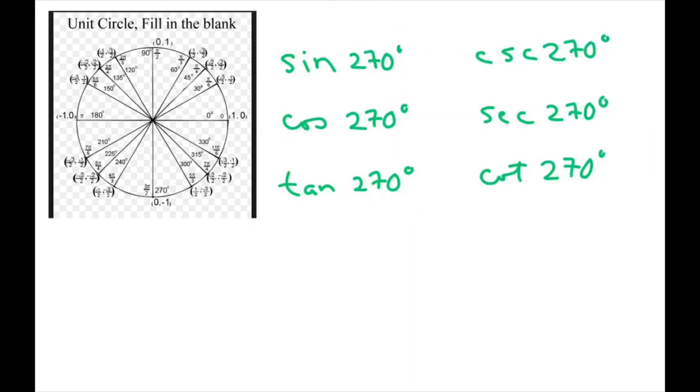And then the last one is 270, which is here. And my ordered pair is 0, comma negative 1, and my r equals 1. So sine is your y, so that's negative 1 over 1, which equals negative 1. Cosine is 0 over 1, because that's your x, and that's going to be 0. So tangent is going to be your y over x, so that's going to be negative 1 over 0, which equals undefined.